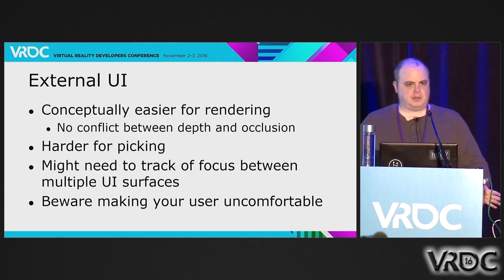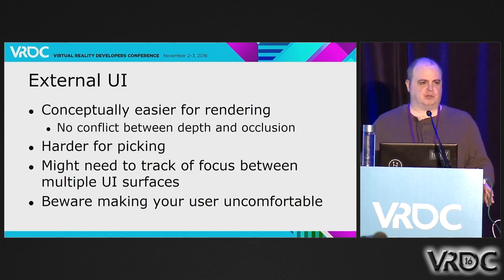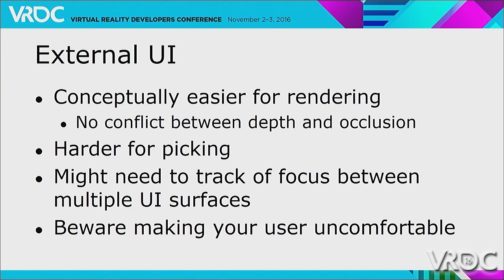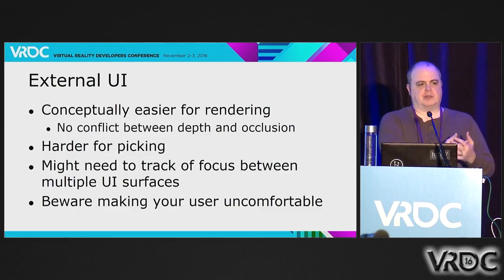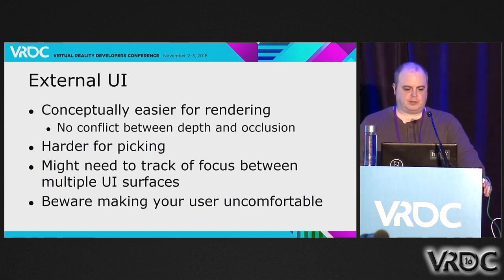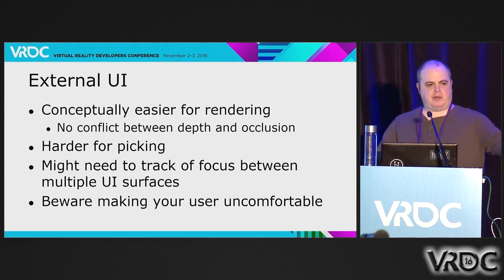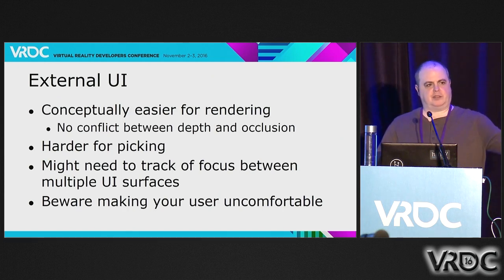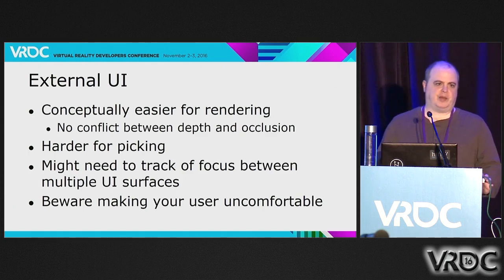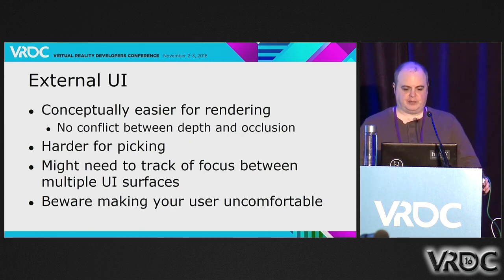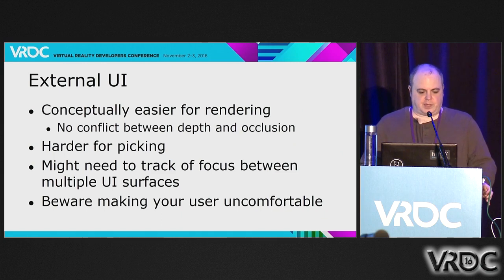External UI is conceptually easy in terms of rendering — you don't have to think about how to position this UI relative to the user. It has a position in a scene. If you're rendering a cockpit and there's a UI element in the cockpit, it has a particular place it goes, just as you're rendering the rest of the cockpit. There's also no conflict between the depth of the object and occlusion — if something in the scene is closer to you than the UI element, that object just obscures the UI. However, compared to internal UI, external UI is going to be harder for picking.